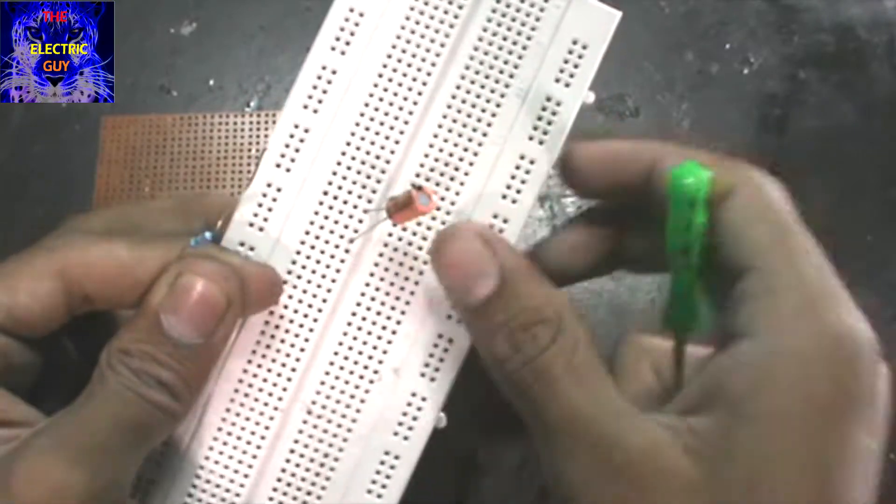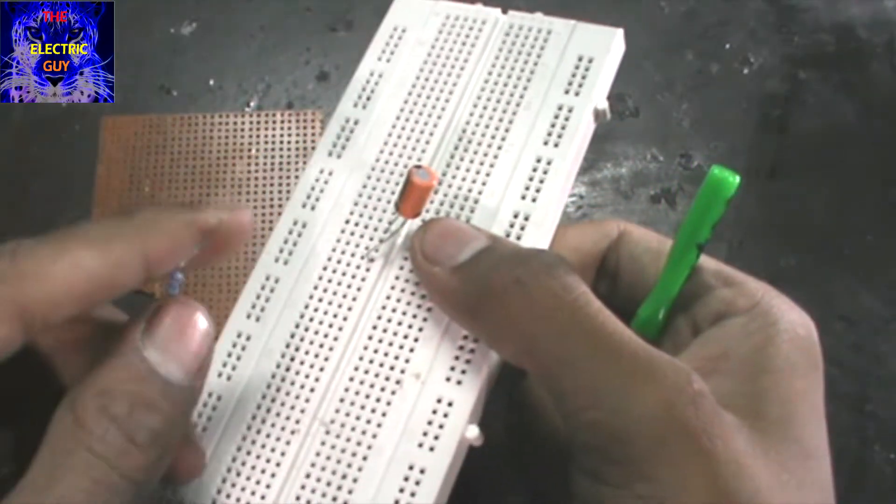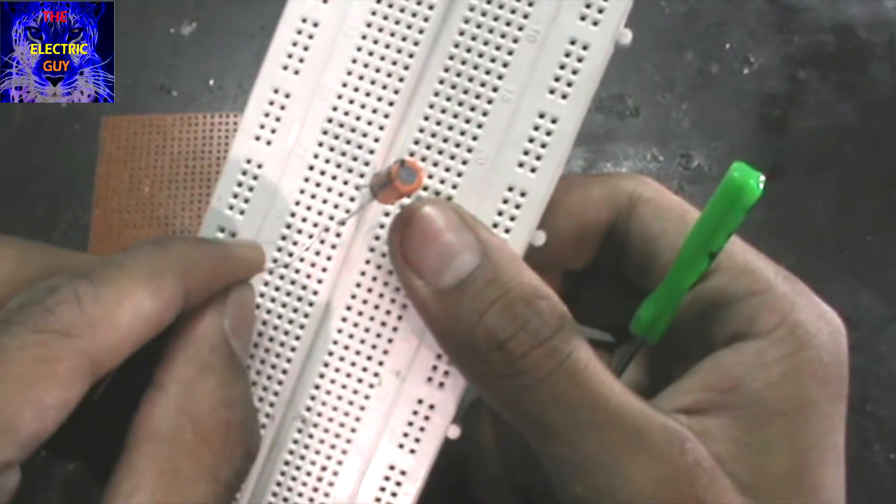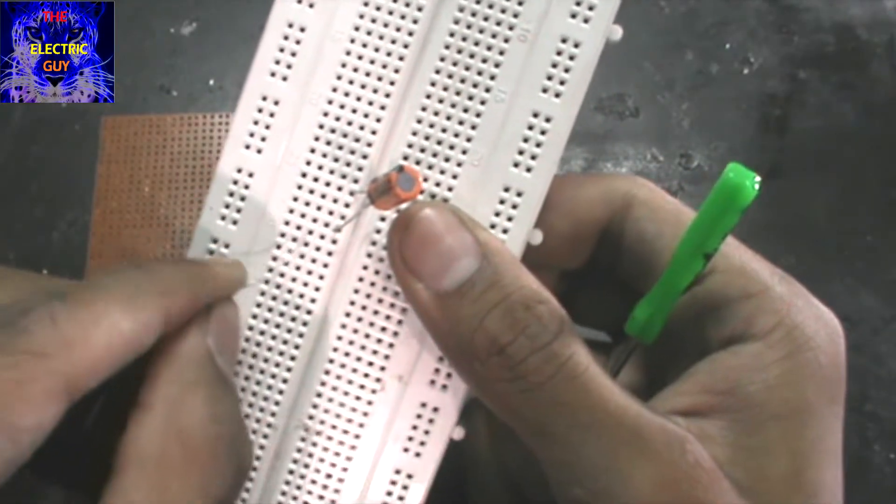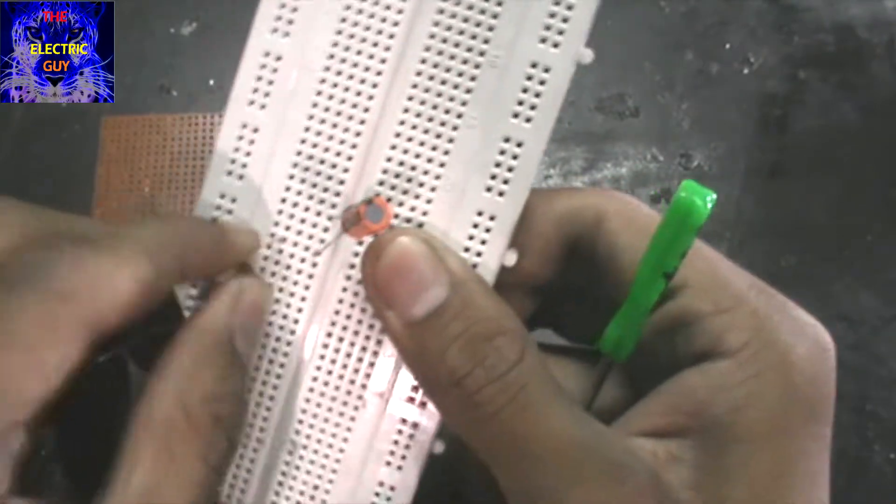Now, if I have to connect the positive side of the capacitor to the resistor, I have to connect to this rail, this horizontal layer, like this.